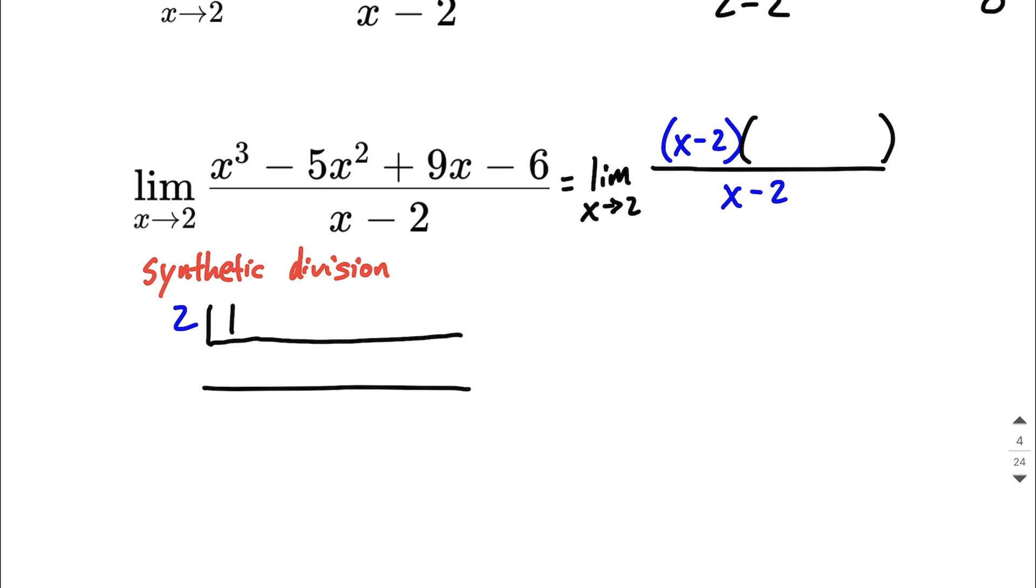Next, we're going to go ahead and copy down each of the coefficients for each term from our numerator. So 1x cubed, negative 5x squared, 9x to the first power, and negative 6 for our constant. If we had skipped a power of x, we'd want to put a 0 as a placeholder for that term.